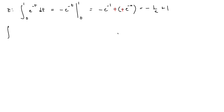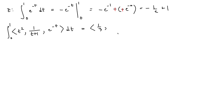Therefore, the definite integral from 0 to 1 of the vector function with components t squared, 1 over t plus 1, and e to the minus t dt is equal to the vector with components 1/3, natural log of 2, and 1 minus 1 over e.